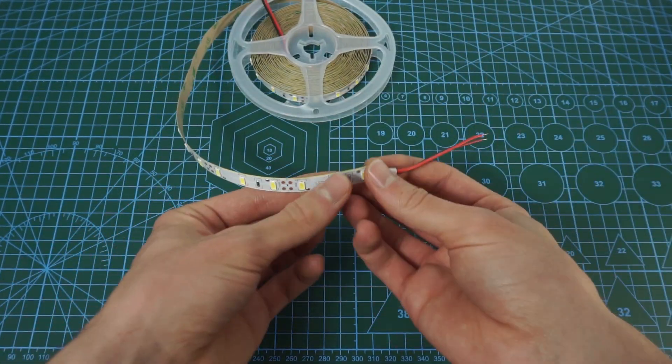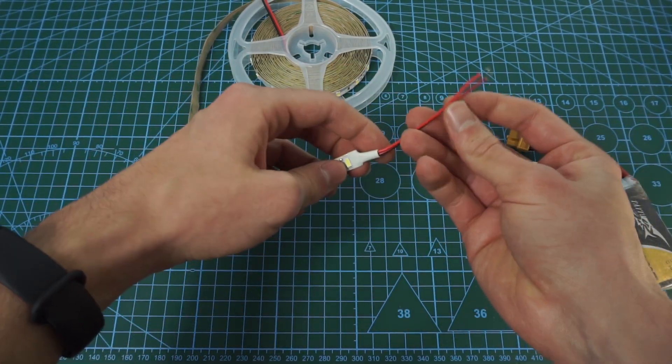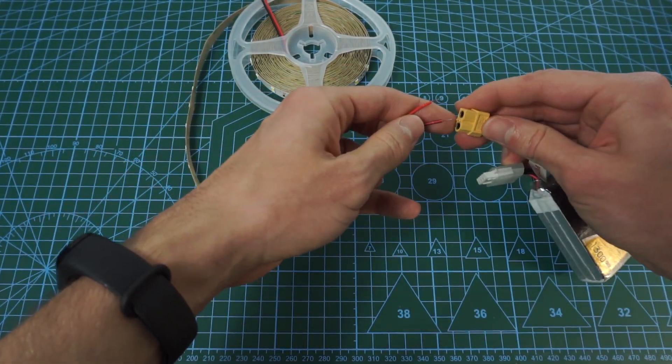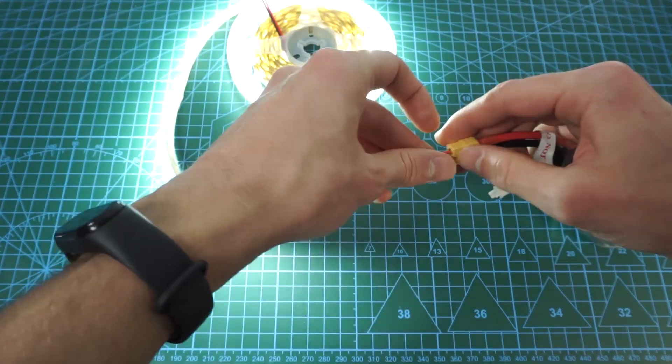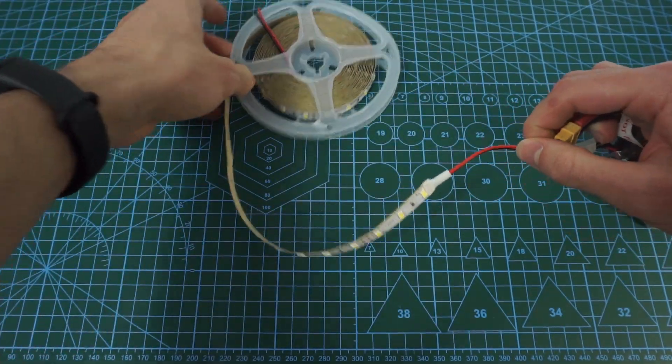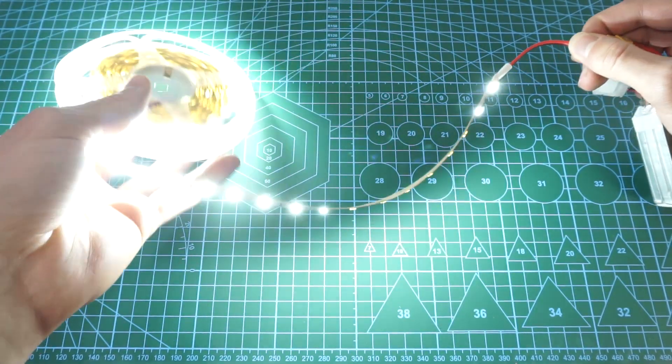Those LEDs run on 12 volts, so we'll need a power supply or simply a 3S battery to power them on. But the problem with those strips is that they heat up quite significantly, and if we don't dispose of that heat, the LEDs will quickly cease to work.